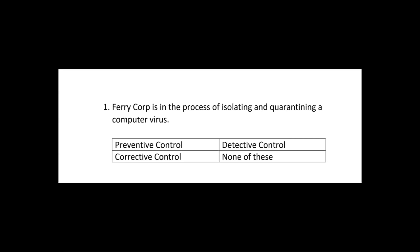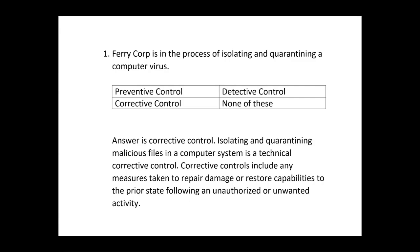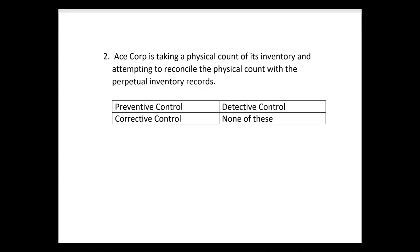That's a corrective control. Isolating and quarantining malicious files in a computer system is a technical corrective control. Corrective controls include any measures taken to repair damage or restore capabilities to their prior state following an unauthorized or unwanted activity, like a computer virus.